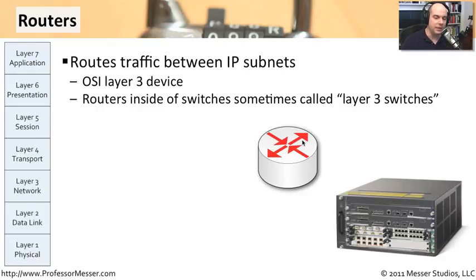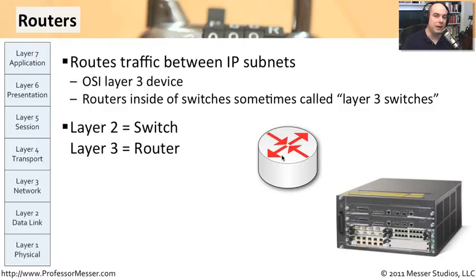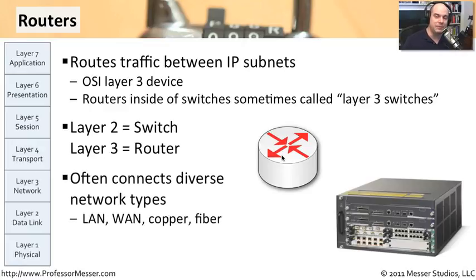On network diagrams, routers are represented with arrows pointing in different directions. If you see a 90-degree angle on an arrow going through a diagram, it's probably referring to a router. Layer two means switching; layer three means routing — that's usually how we represent it. Sometimes instead of saying 'route,' we say we need to do layer three between two particular subnets. Routers are also able to connect different network types — wide area network connections, fiber-based connections, copper-based connections — and the router handles signaling translations or packet translations between those different networks, letting us connect very diverse networks together.